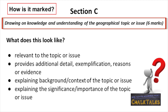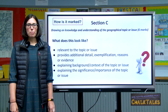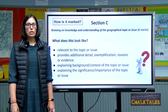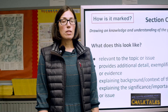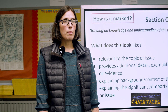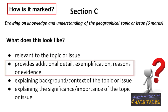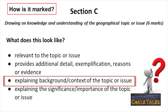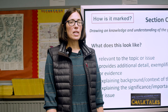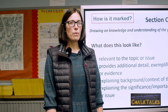Section C draws on your knowledge and understanding of your chosen topic and is also worth six marks. This is basically your background information and is an opportunity to look at the area of study and put it into context. Think about why you chose this topic of study and why it is significant — this is a chance to give additional detail, exemplify and give background theory where appropriate. These marks can also be credited anywhere within your write-up.